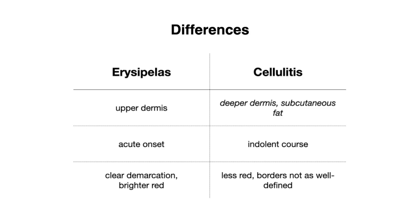When it comes to appearance, erysipelas tends to have a clearer demarcation and is brighter red in appearance, while cellulitis is usually less red and its borders are not as well defined. The way to think about this is that because erysipelas is a more superficial infection, the color is going to be brighter and the borders are going to be clearer.